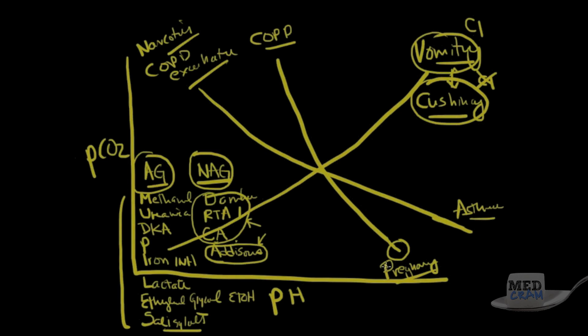Those are the examples. In the next section we'll go through practice questions, working through blood gases and chem 7s step by step to figure out exactly what's going on with the patient. Join me for part 6.